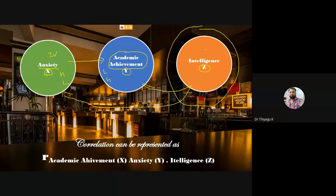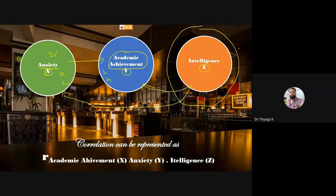By default, the intelligence variable may affect both X and Y. Therefore, we must use partial correlation to nullify the effect of the third variable and check how much X can contribute to Y. This technique helps us find the exact relationship between the independent and dependent variable after removing the confounding influence.